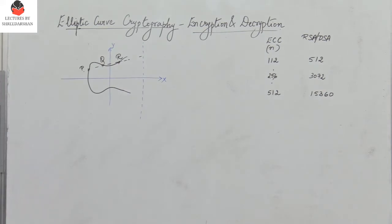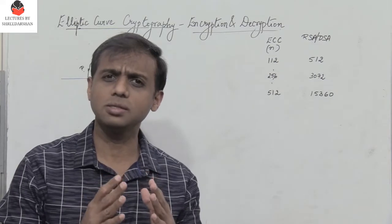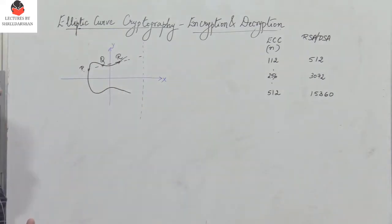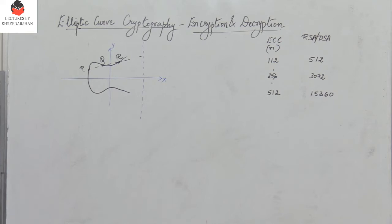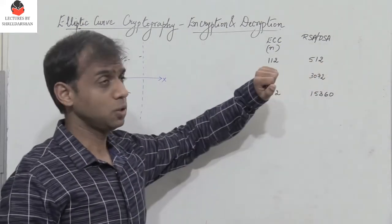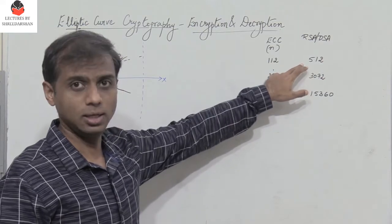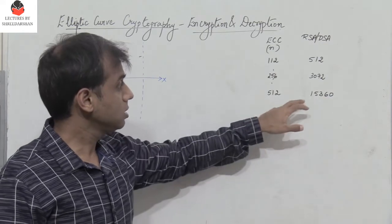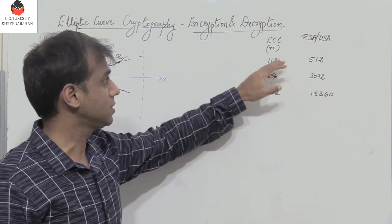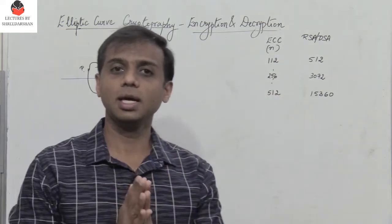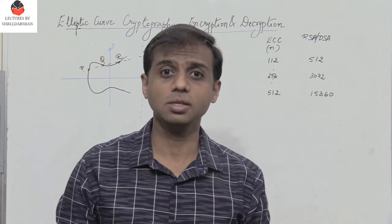Why is elliptic curve used for encryption and decryption? This process provides a higher level of security, or the same level of security with a reduced number of bits. For example, just 112 bits in ECC provides the same security as 512 bits in RSA and DSA. Similarly, 15,360 bits in RSA corresponds to only 512 bits in ECC. You get a very high level of security with a reduced number of bits, and that is a great advantage.